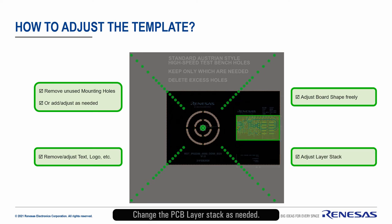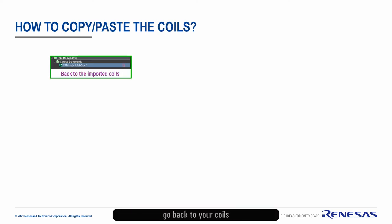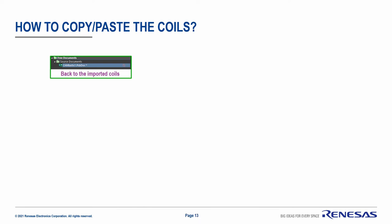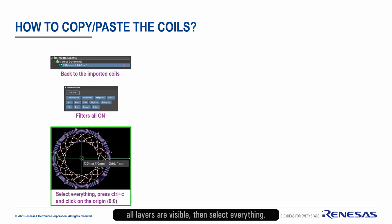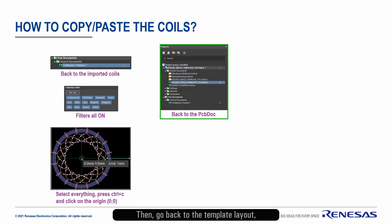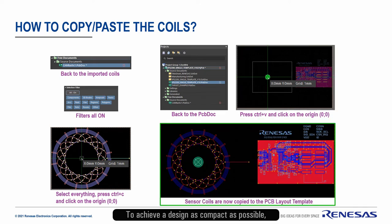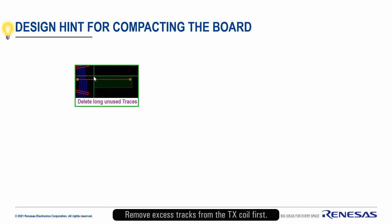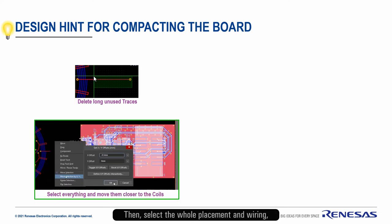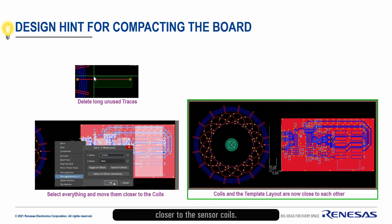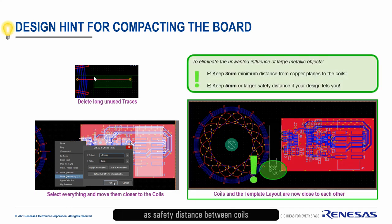Change the PCB layer stack as needed. When your template is ready, go back to your coils you have just generated as PCB. Turn on all filters and make sure all layers are visible, then select everything. Copy them with zero, zero origin coordinates. Then go back to the template layout and paste the copied coils at zero, zero origin coordinates. To achieve a design as compact as possible, you can move the coils and the template placement closer to each other. Remove excess tracks from the TX coil first, then select the hole placement and wiring and move the selection closer to the sensor coils. Please keep at least three to five millimeters as safety distance between coils and any copper areas. This helps you eliminate unwanted influence that would spoil your good sensor performance.